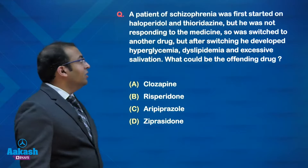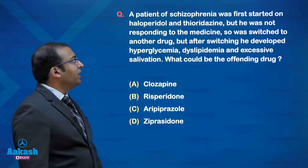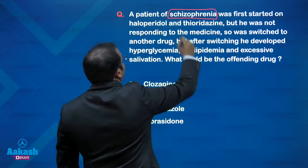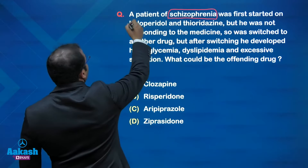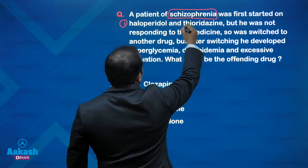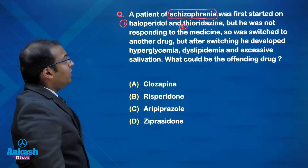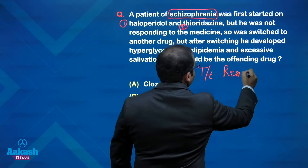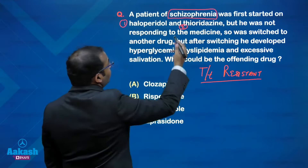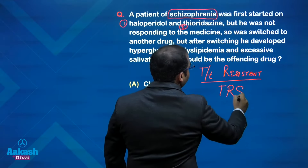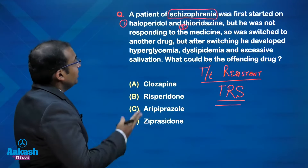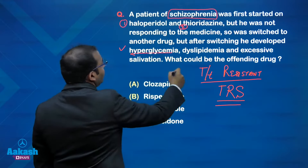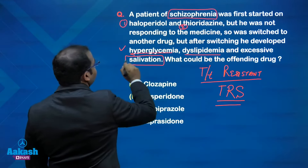Let's start with the first question. A patient of schizophrenia was first started on haloperidol and thioridazine — this question gives you a clear diagnosis of schizophrenia. The patient had been tried on two antipsychotics: haloperidol and thioridazine, and was not responding to these medicines. This hints towards a case of treatment-resistant schizophrenia. The patient was then switched to another drug, after which they developed hyperglycemia, dyslipidemia, and excessive salivation.